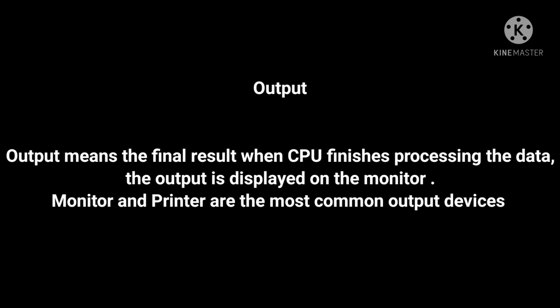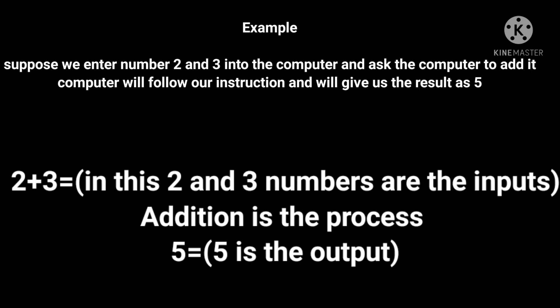The output is displayed on the monitor. Monitor and printer are the most common output devices. Suppose we enter numbers 2 and 3 into the computer and ask it to add them. The computer will follow our instruction and give us the result as 5. In this, 2 and 3 are the inputs, addition is the process, and 5 is the output — the result.